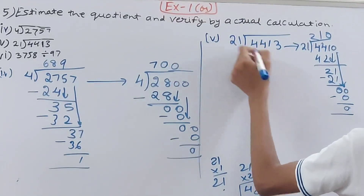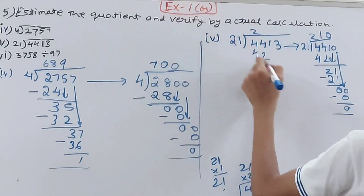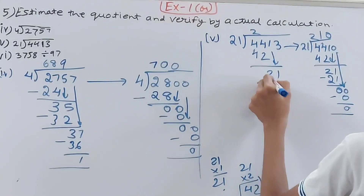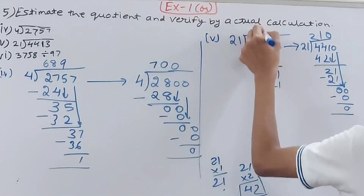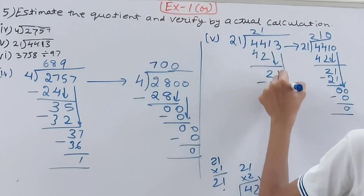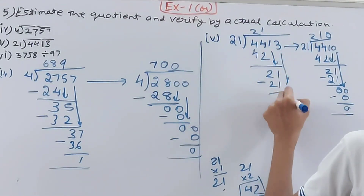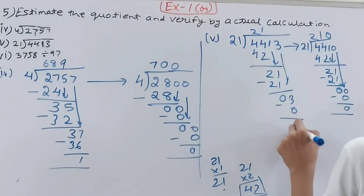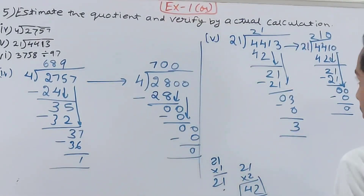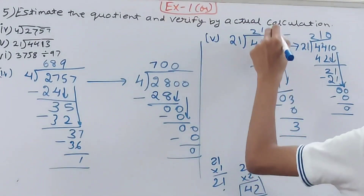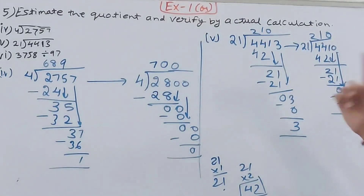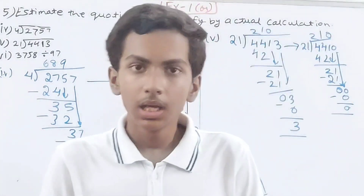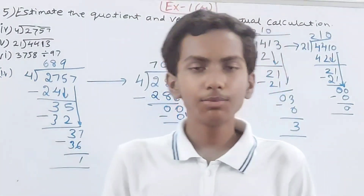For the actual 4413 ÷ 21: 44 — take 42, 2 times, remainder 2. Bring down 1, giving 21. 21 into 21 is 1 time, remainder 0. Bring down 3. 3 is not divisible by 21, so remainder 3 and 0 in quotient. Actual quotient is 210 remainder 3.